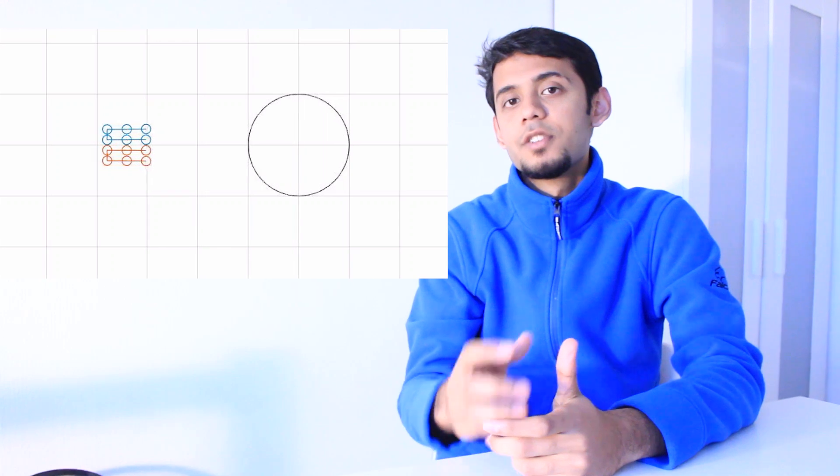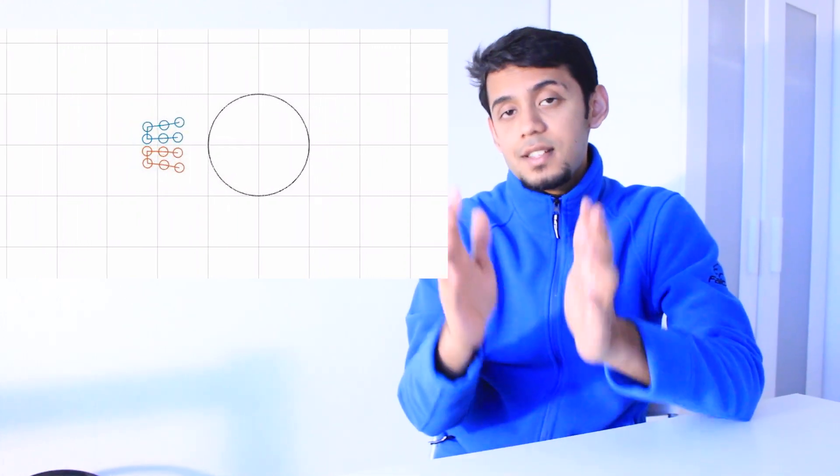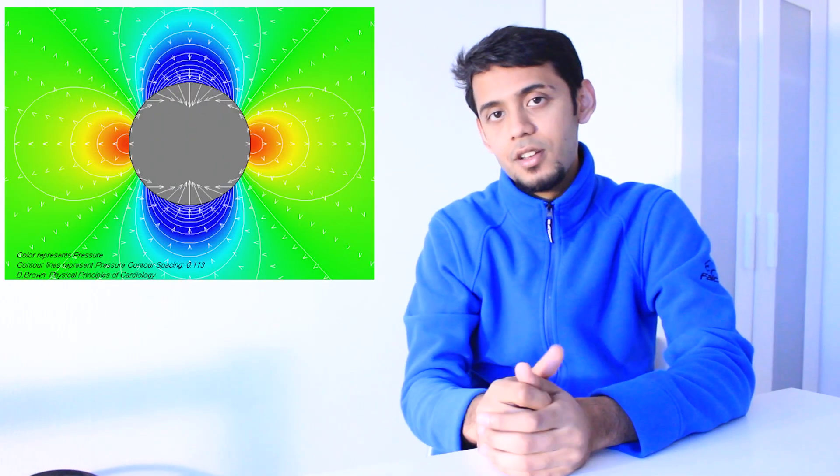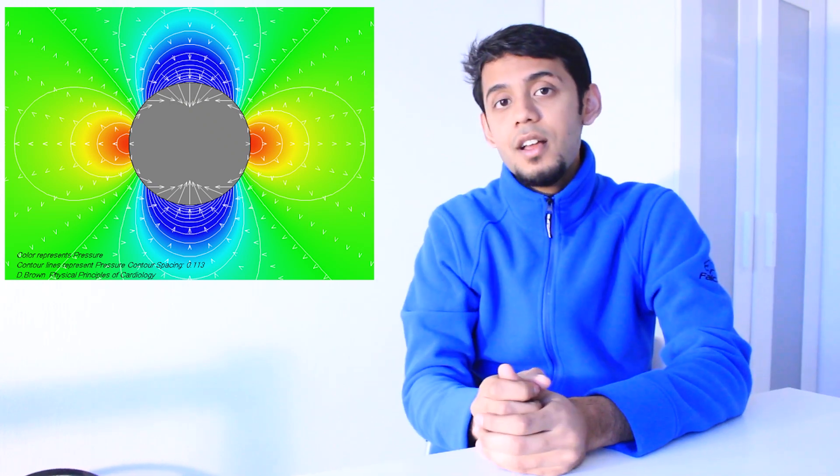Now let us consider a group of particles flowing towards the cylinder. Because the fluid is a continuum, these particles receive information from the particles ahead of it, because of which these particles get squished and they slow down. This squishing now leads to a formation of a high pressure region in front of the cylinder.